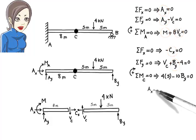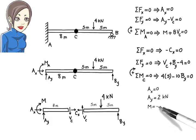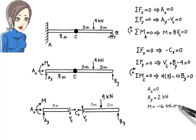Solving the equations for the unknowns, we get AX equals 0, AY equals 2, M equals negative 16, BY equals 2, CX equals 0, VC equals 2.